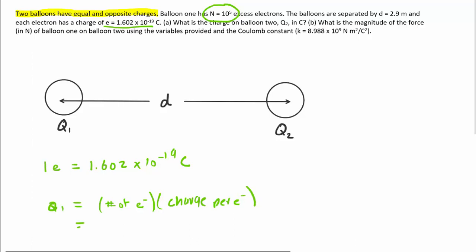And so we can compute that relatively straightforwardly. We know the number of electrons on balloon one is 10 to the power of five, and then we can multiply that by the charge on each electron. And when we work that out, we can see that we have 1.602 times 10 to the negative 14th Coulombs as the charge on Q1.